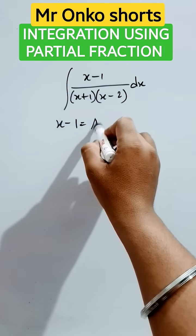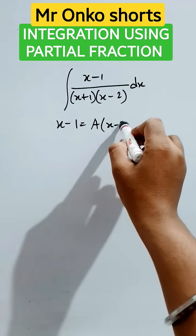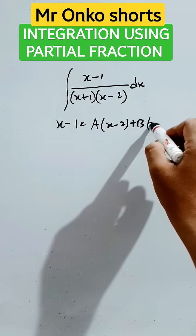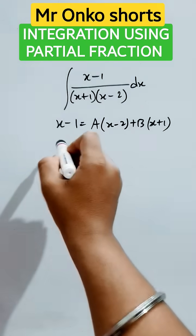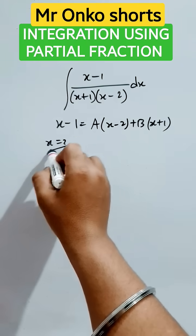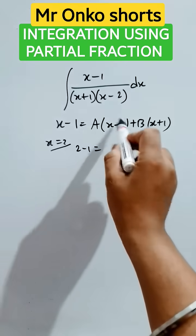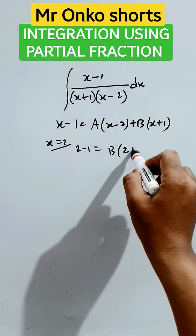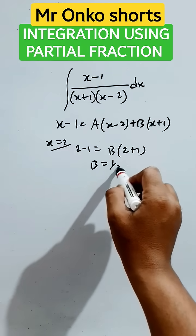We will write this as a into x minus 2 plus b into x plus 1. Now we will put x equals 2 here. So it will be 2 minus 1 equals, it will be 0 and it will be 2 plus 1. So b equals 1 by 3.